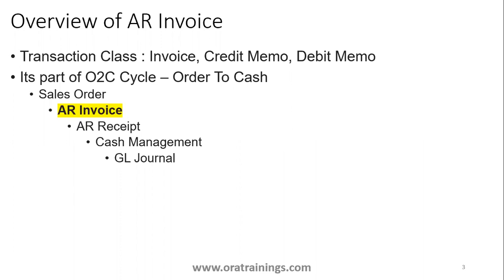In which particular cycle or process does AR invoice come into picture? Generally AR invoice comes in the O2C cycle. The process may start with sales order creation, then AR invoice, then receipt, cash management, and GL. But you can also create them individually — you can create an AR invoice individually and then post it to GL.